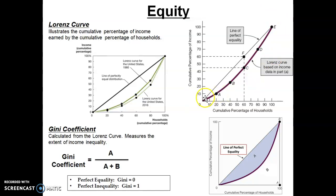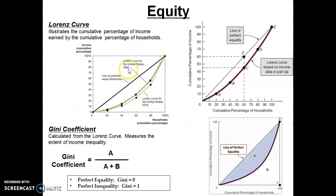We connect the dots and construct our Lorenz curve. This allows us to measure the extent of inequality — the further the Lorenz curve is from the line of perfect equality, the greater the inequality of income. This data here reflects the U.S. in 1980 (dark green) and 2016 (light green). You'll note the Lorenz curve has moved further away from the line of perfect equality, meaning income inequality increased from 1980 to 2016.